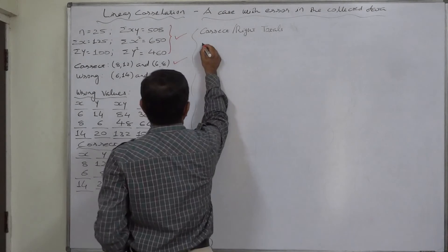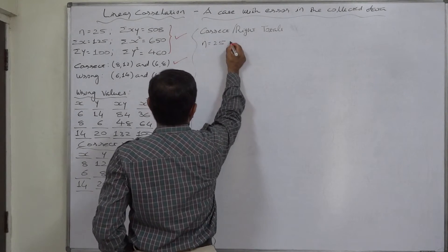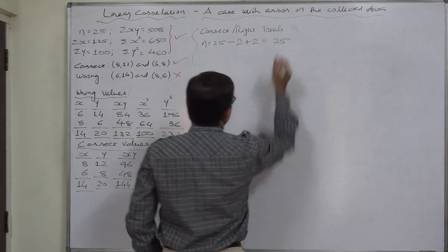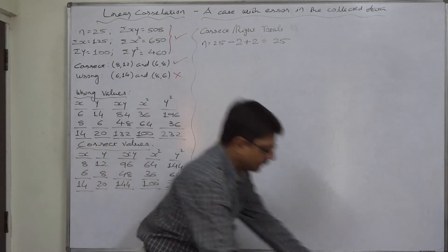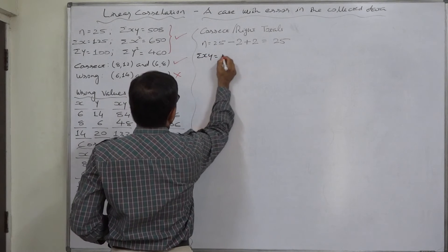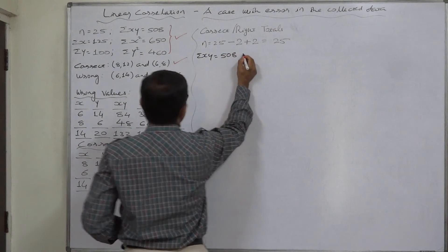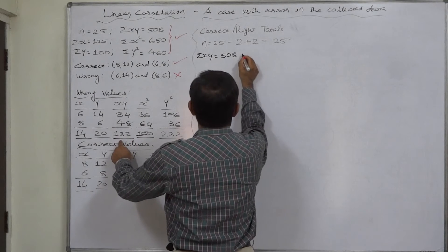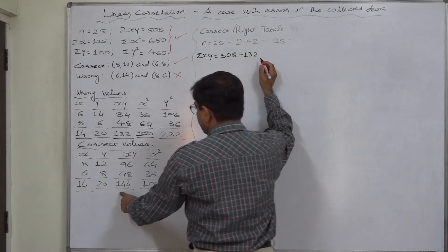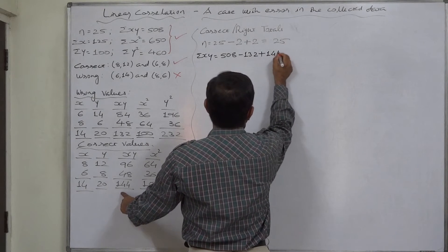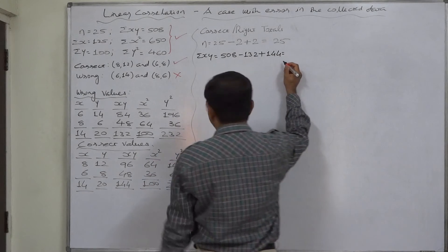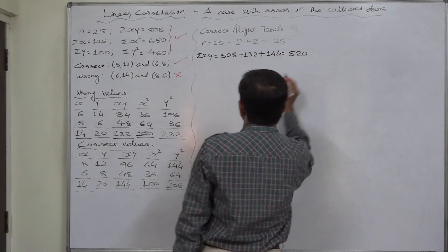And first of all, n, it was 25. We removed two pairs and we included two correct pairs. So n remains 25. Similarly, what about Σxy? It was 508. Now, remove 132 that is effect of wrong pairs and include 144 or add 144 that is effect of correct pairs. So it comes to 520.